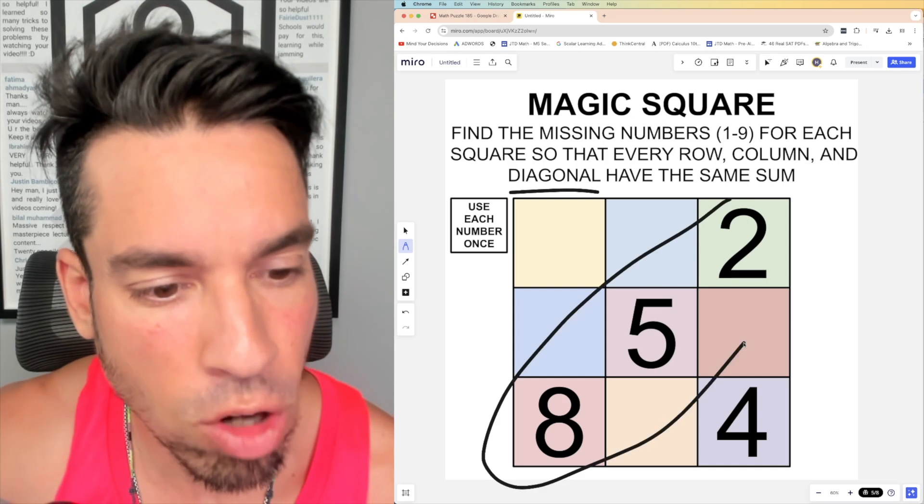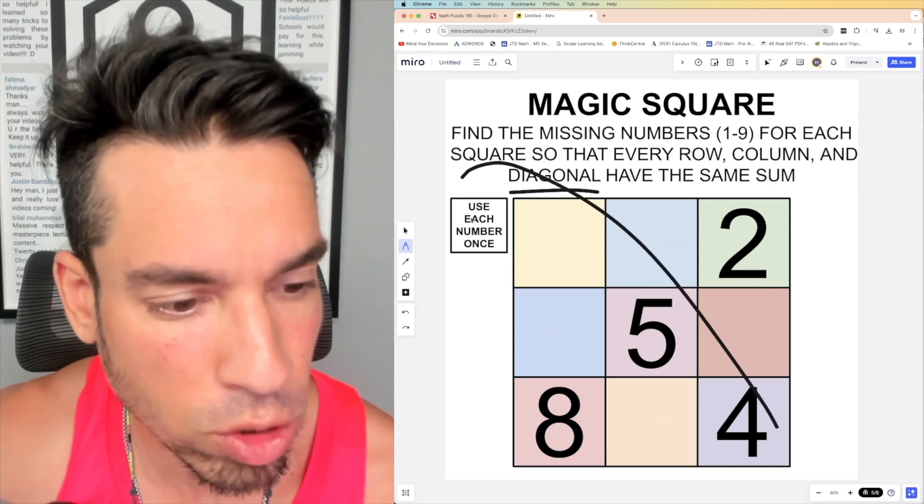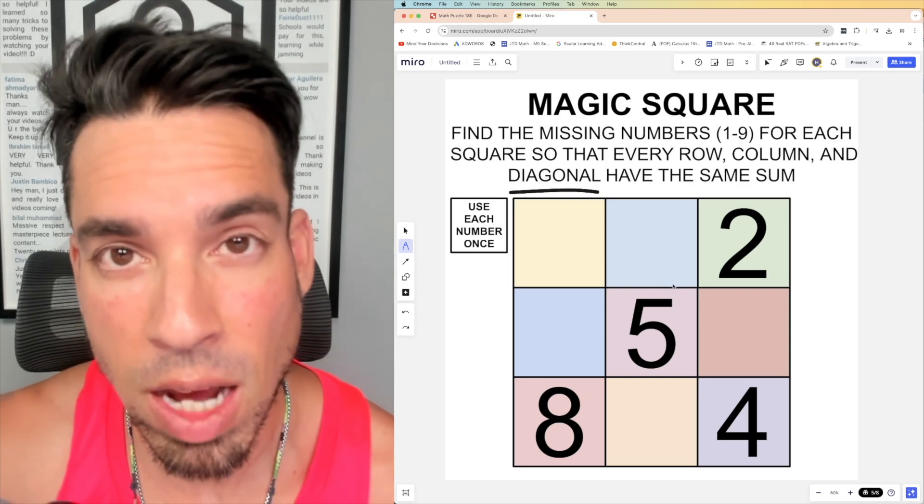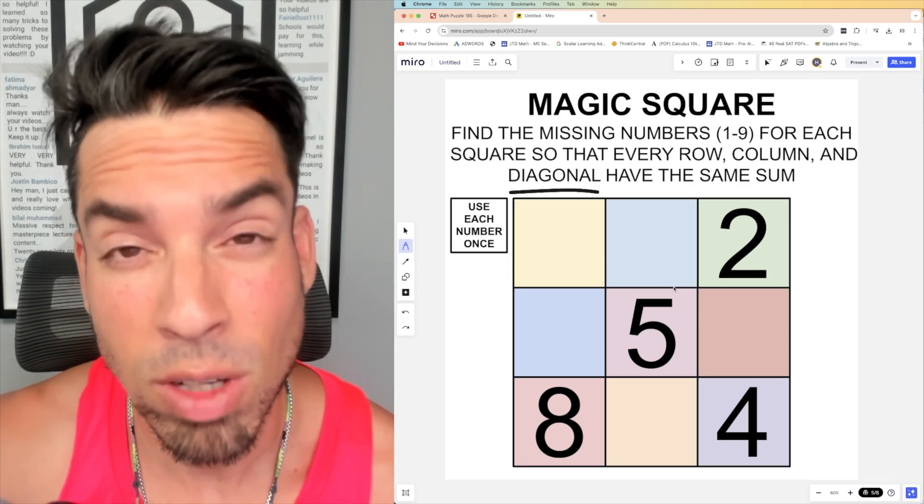And when we're talking about diagonals, we're really talking about the long diagonals, the full ones where we got three squares like that and like that. Hit that pause button and see if you can figure it out. When you're ready, hit play and I'll give you the explanation.